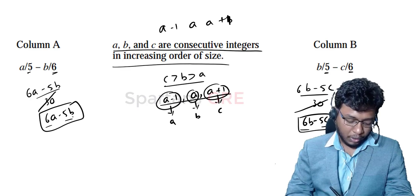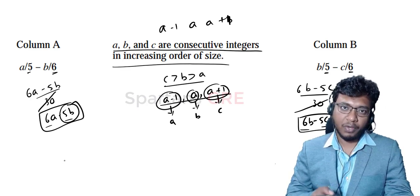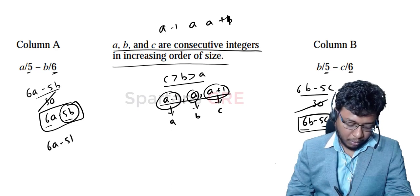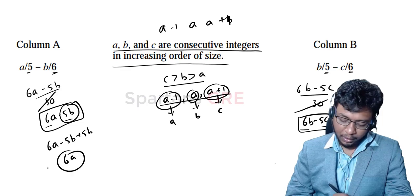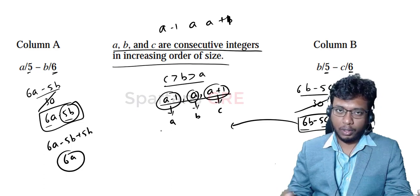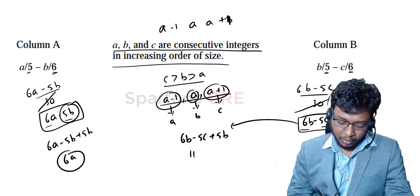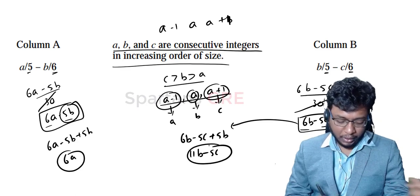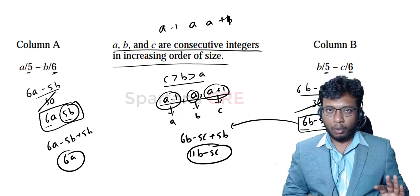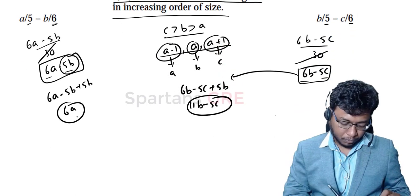To eliminate B, I add +5B to both quantities. In quantity A: 6A − 5B + 5B gives 6A. In quantity B: 6B − 5C + 5B gives 11B − 5C. Everything up to here can be done mentally.